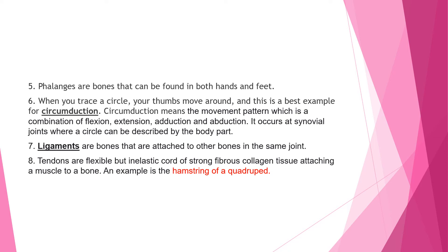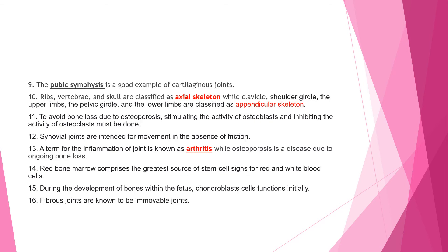Number seven: ligaments are bones that are attached to other bones in the same joint. Do not confuse ligaments and tendons. Tendons are a flexible but inelastic cord of strong fibrous collagen tissue attaching a muscle to a bone — an example is the hamstring of a quadruped. So if you are asked whether the hamstring of a quadruped is a tendon or ligament, the answer is tendons.